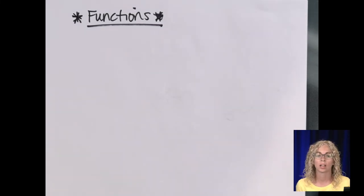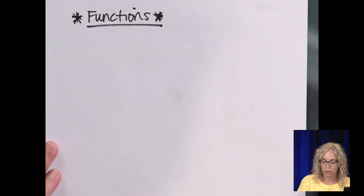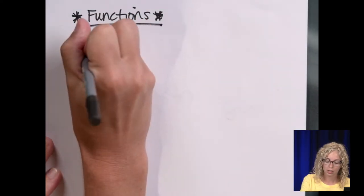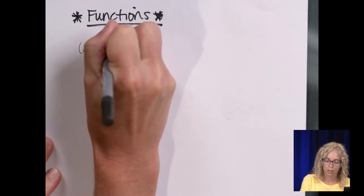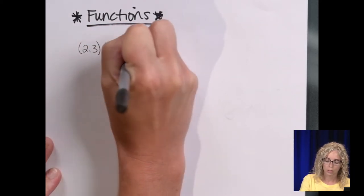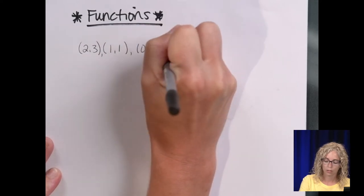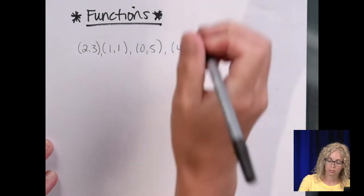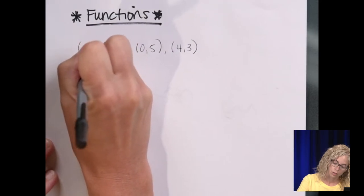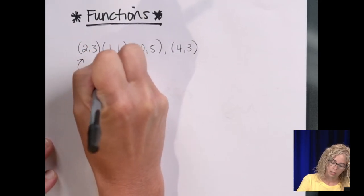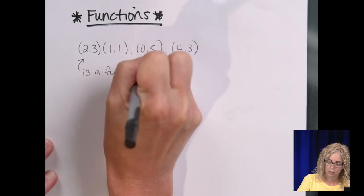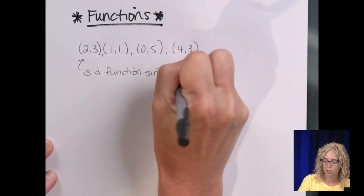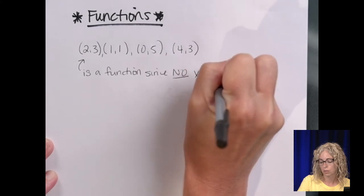This is our second to last unit on quadratic and linear functions, but we start by just talking about functions in general. So remember, in any function, or if we have a set of points, say (2,3), (1,1), (0,5), and (4,3), this is a function since no x-value repeats.